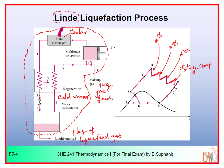After exiting the last stage compression, the gas is cooled in the cooler (three to four). Then four to five is the regenerator — you cool the gas further to a lower temperature by exchanging heat with the cold vapor from eight to nine. So four to five transfers heat to eight to nine in the regenerator.